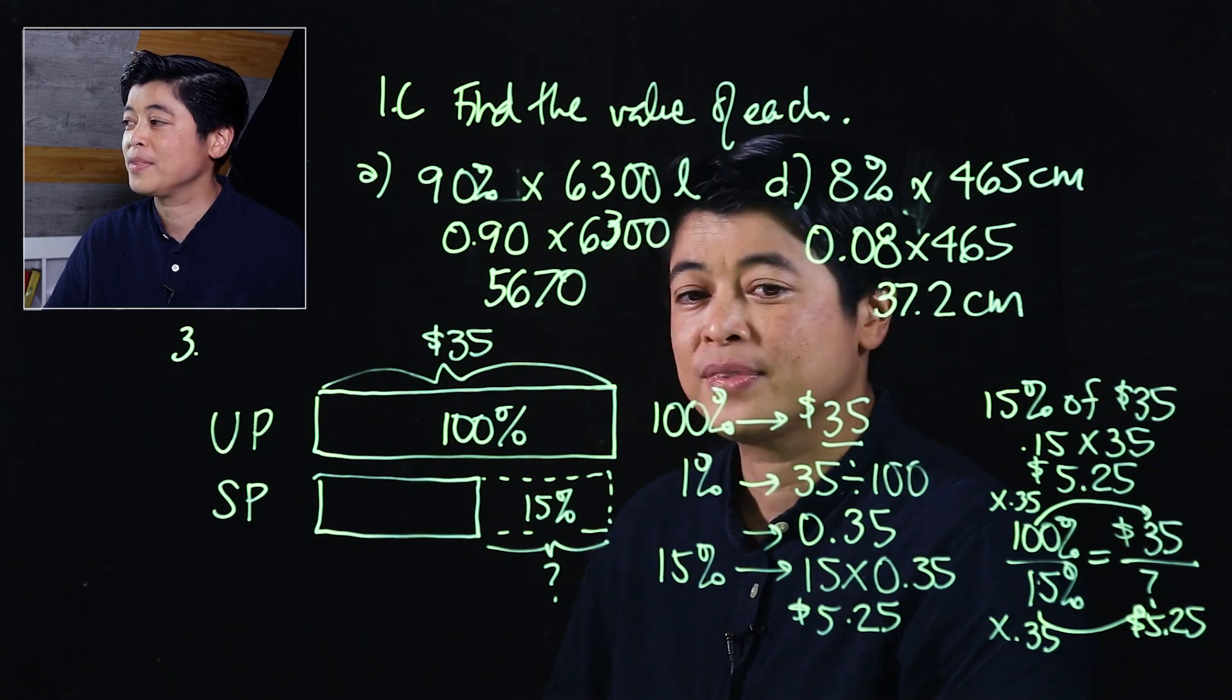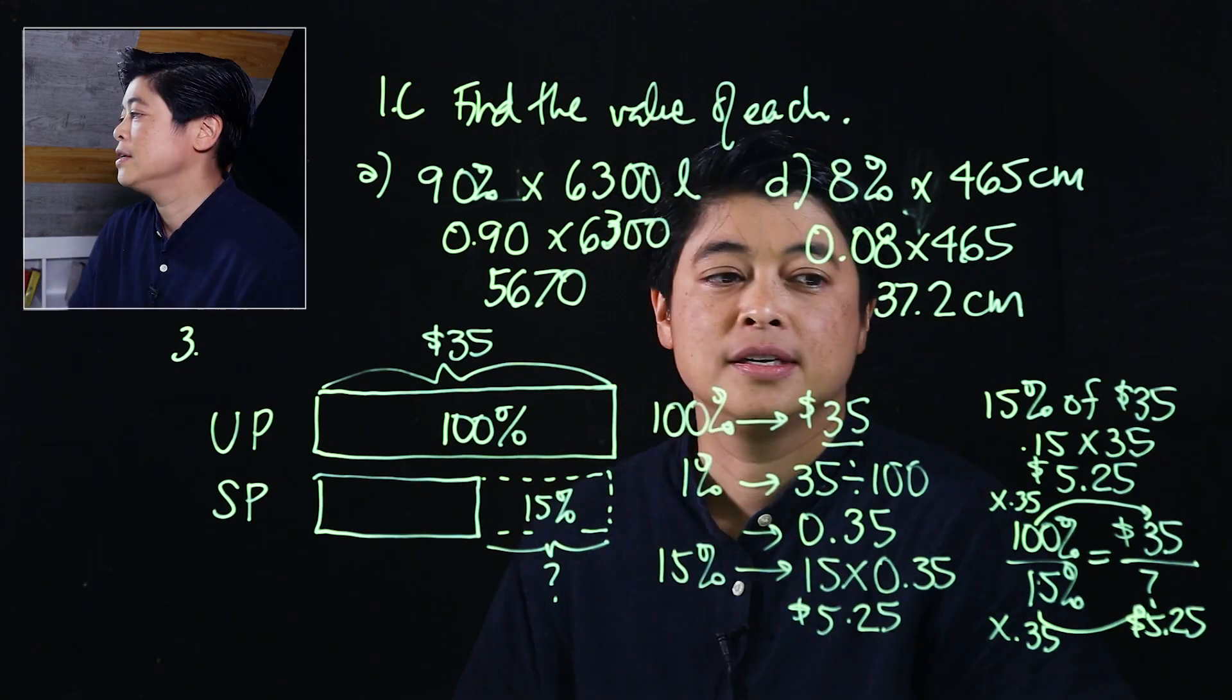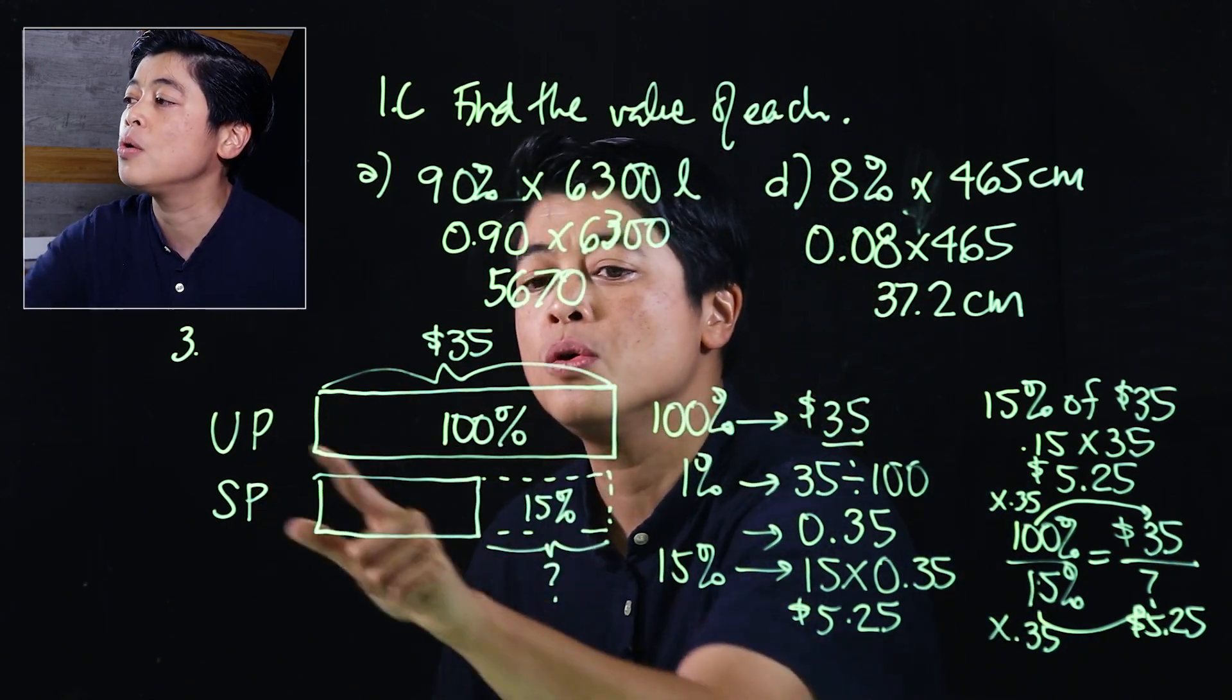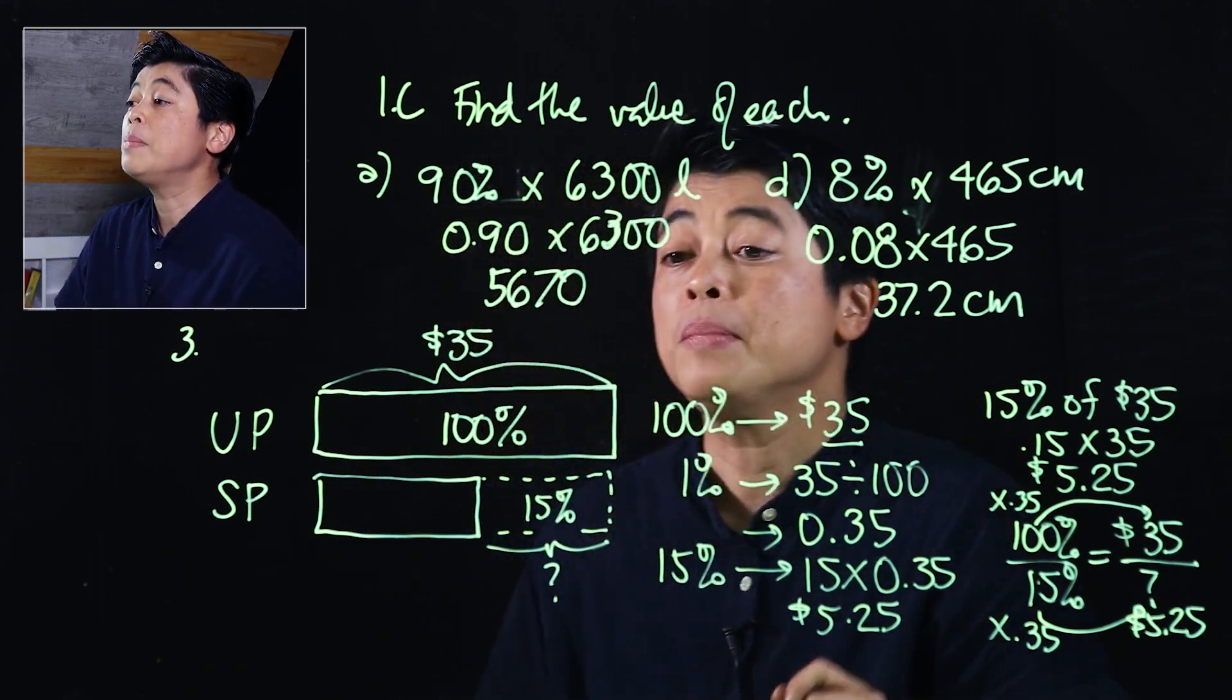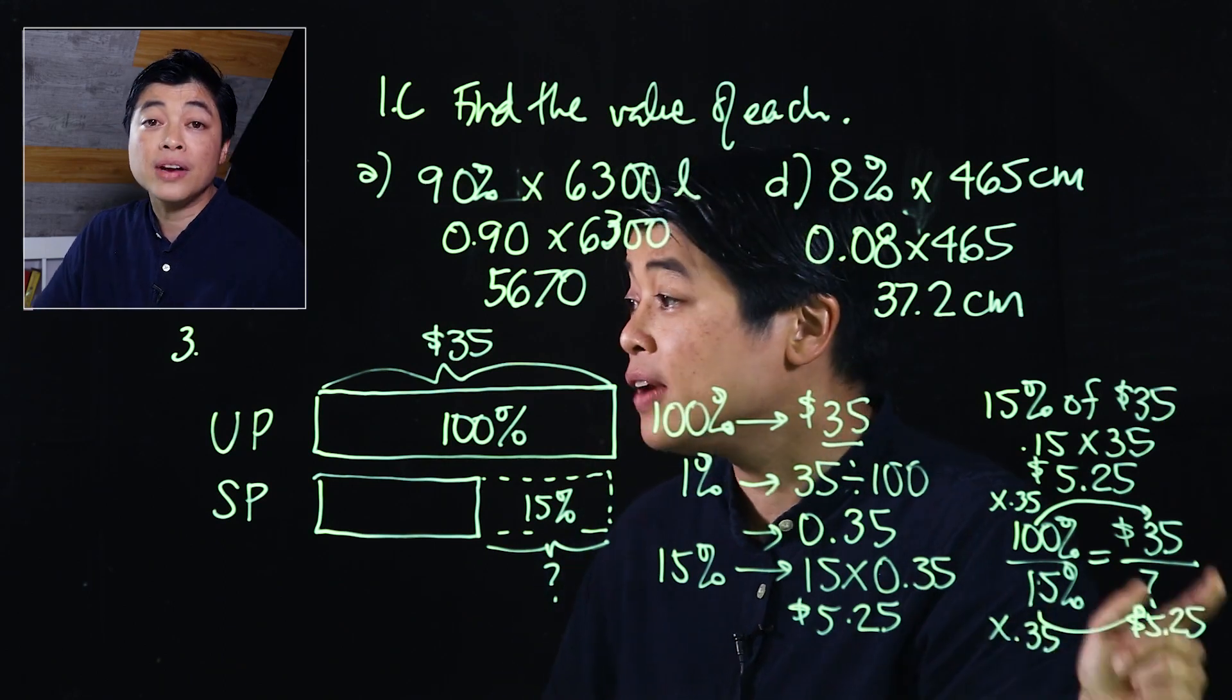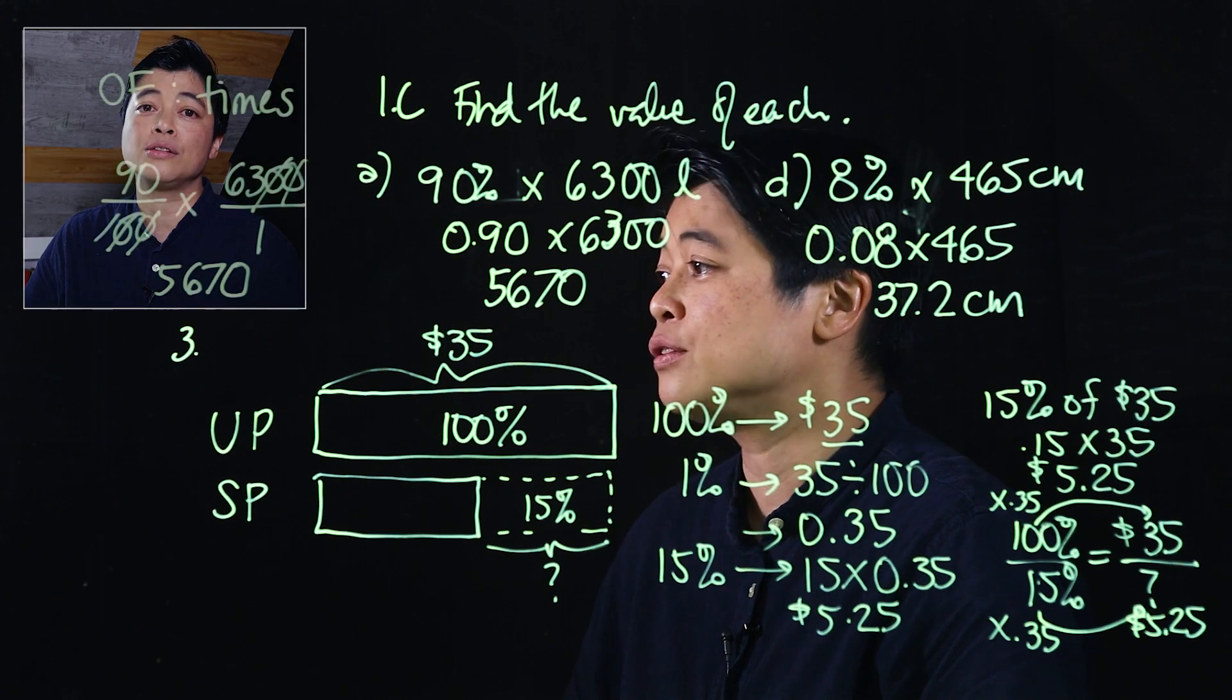So again, the book is long and tedious. The calculator is easier because since we know the whole, we want 15% of the whole. But if we're not allowed to use the calculator, then the equivalent fraction approach is actually ideal to use.